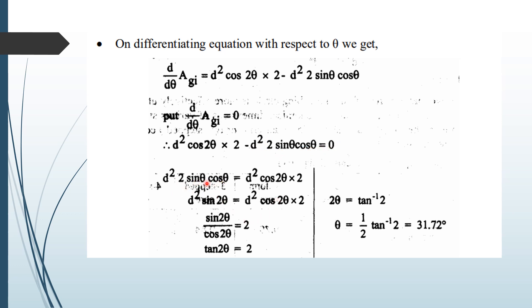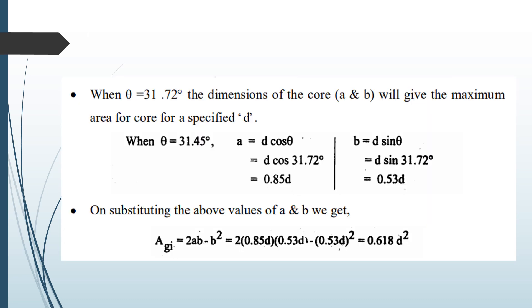From the differentiation: d²·sin 2θ = 2·d²·cos 2θ, so tan 2θ = 2. Therefore theta = ½ · arctan(2) = 31.72 degrees. This is the angle which gives maximum area. For theta = 31.72°, we can calculate a = 0.85d (width of the largest stamping) and b = 0.53d — actually b = 0.53d represents the height of the horizontal lamination, approximately 0.53d, while the stated value is 0.30d.